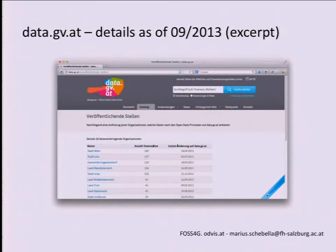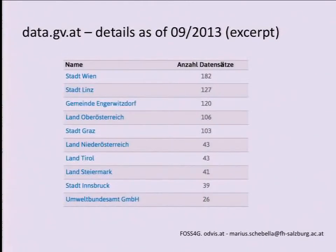It's based on CKAN and as you can see there are cities, there are federal states, then there are also national organizations and communities who share data to the public. There are 20 different publishers, which makes dealing with the data difficult. Here you can see the authorities that publish the most data sets, which is Vienna and Linz, then there is a small community in Upper Austria and then the federal state of Upper Austria and also other cities.